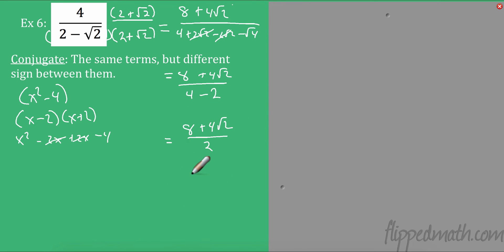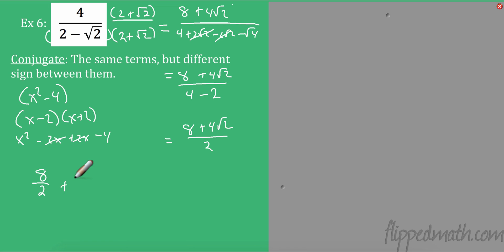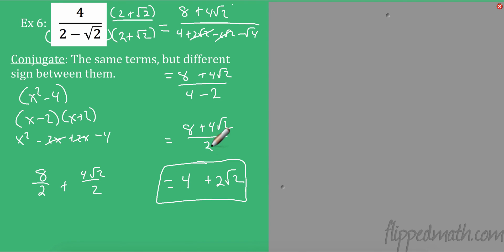Now check if this fraction simplifies. I have two terms on top — both must share a common factor with the denominator. Does 2 go into 8? Yes. Does 2 go into 4? Yes. So dividing everything by 2: 8 over 2 is 4, and 4 radical 2 over 2 is 2 radical 2. So the answer is 4 plus 2 radical 2. If the denominator were 3, I would leave it as 8 plus 4 radical 2 over 3 because it wouldn't simplify.